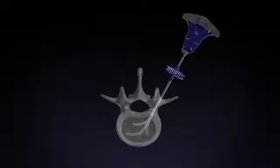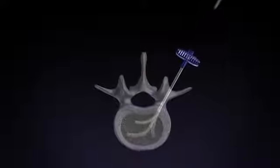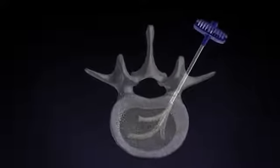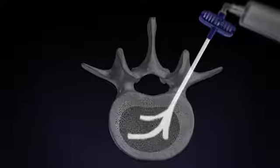Power curve is removed. A cement delivery cannula is then introduced into the vertebra and locked into the working cannula in order to deliver the high viscosity cement to the fracture.